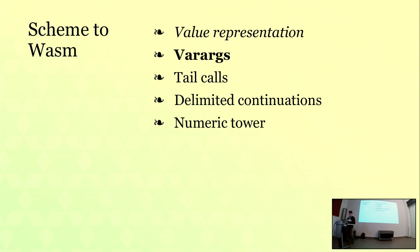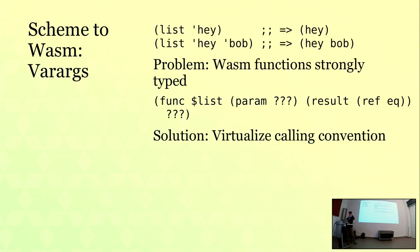Scheme has several interesting challenges. One is variable numbers of arguments. Functions are strongly typed in WebAssembly — if a function says it takes two arguments with types i32 and f64, it can only be called with those types. Whereas in Scheme, not only do we call functions with values of any type, we can call them with any number of values. Some functions can accept multiple numbers of values — in Guile we use this for parsing keyword arguments, optional arguments, and so on. How do we use WebAssembly's strongly-typed functions to represent functions that can take a variable number of arguments?